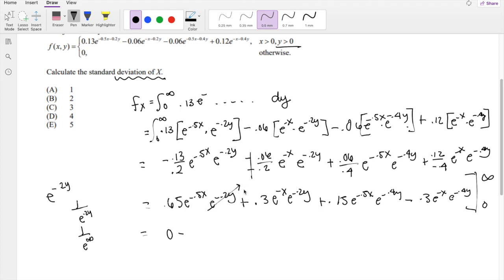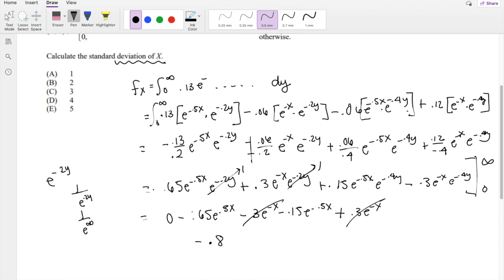This term goes to one. So you're left with 0.65 e to negative 0.5x. Same thing, this term goes to one, and since we're subtracting, this will be a negative term right here too. Negative 0.15 e to the negative 0.5x. And then last one would be positive 0.3 e to negative x. So these two actually cancel out. Okay, I lost the negatives on here. So this should be negative. So this should be positive. So this will be equal to 0.5 e to the 5x.